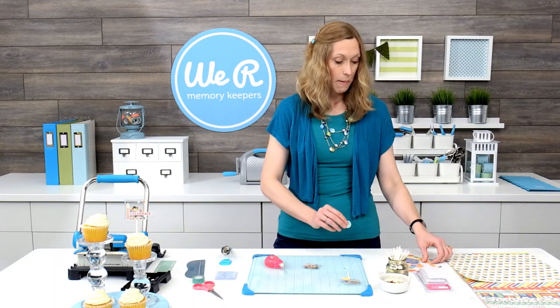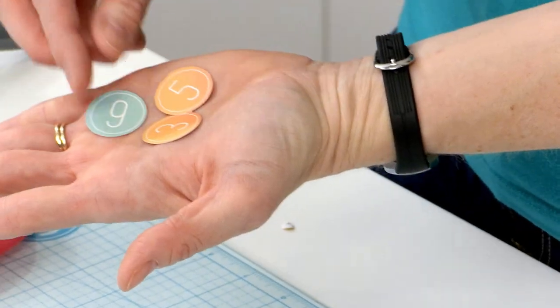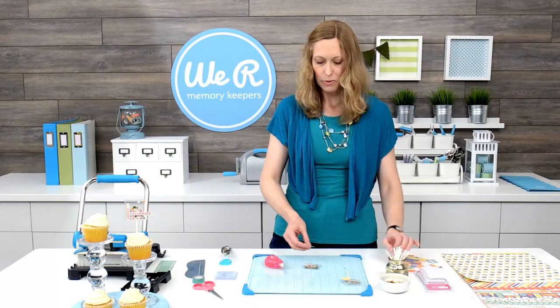And then I'm going to take one of these little numbers from the ephemera pack, and if you notice there's a number for each year, that's kind of fun. So we're going to just grab the number nine for a ninth birthday party.